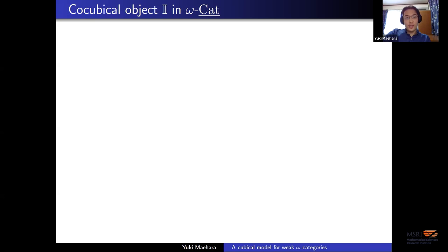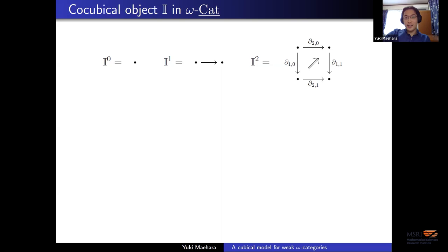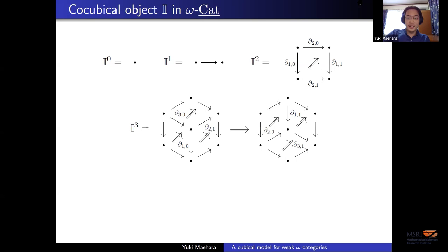We want the co-cubical object, which I call I, in omega-cat. We send the zero cube to the terminal omega category — just a single object — the one cube to a single arrow, and the two cube is supposed to look like a square. We have a square of these one cubes, and in the middle we have one cell, because I'm thinking of these as globular omega categories. So we have these one cells that obviously compose, and then we want this two cell in the middle. In this talk we go up another dimension and I'll draw the three cube.